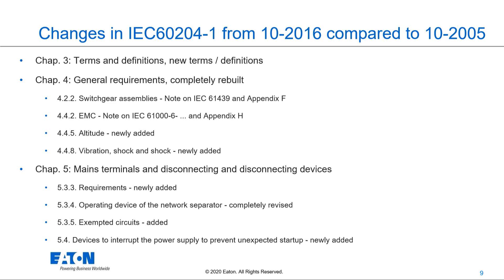Looking at the changes in IEC 60204-1 from 2016 compared to the former version from 2005: in Chapter 3, Terms and Definitions, new terms and definitions have been added. Chapter 4, General Requirements, has been completely rebuilt. Importantly, for switchgear assemblies there is now a link to IEC 61439. EMC measures and the new Appendix H are also linked in this chapter.